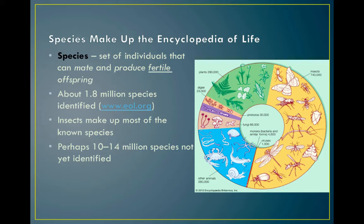I'm going to be showing you a different version of that, but first I wanted to remind you what a species is, which we discussed in a previous lecture. That is a set of individuals that can mate and produce fertile offspring — remember, hybridization is not the same thing. About 1.8 million species have been identified. Insects make up most of the known species. Perhaps 10 to 14 million species out there are not yet identified, so if you'd like to name things after yourself — or after somebody you don't like — this is definitely a field for you.